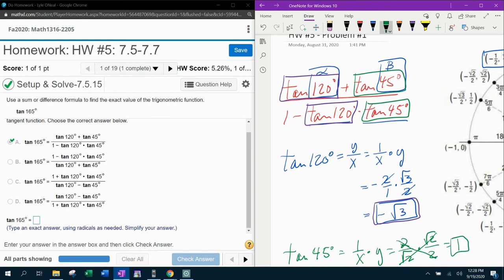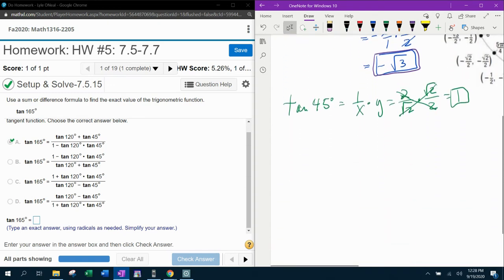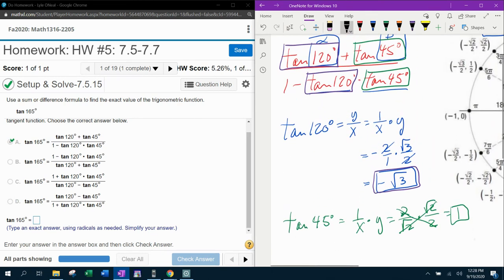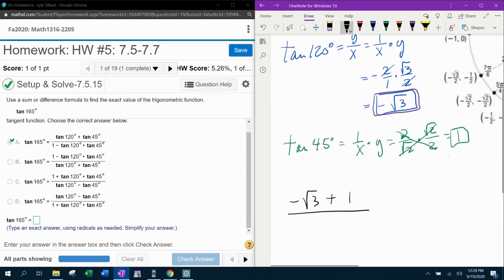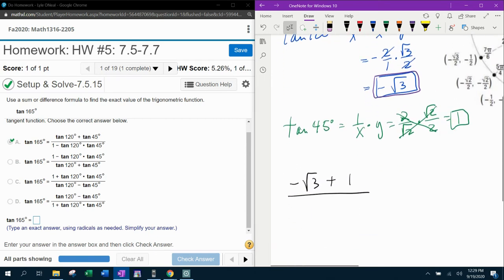And so now I've got all the information I need to actually evaluate this. So here we go. We've got tangent of 120, which is negative square root of three plus tangent of 45, which is one. You follow me? There's my tangent of 120 plus my tangent of 45. There's the numerator done.